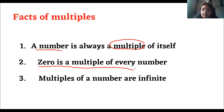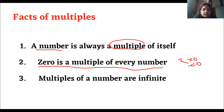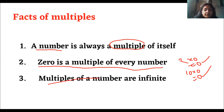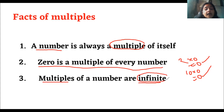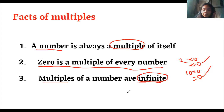Zero is a multiple of every number. Whenever we multiply zero with any number, we get zero only. For example, two multiply by zero — we get zero. Ten multiply by zero — we get zero. So zero is a multiple of every number. Third rule: multiples of a number are infinite, meaning a number's multiples can go on forever — they can become as big as you cannot even think of, because if we keep multiplying a number, we can go as far as we want. Unlike division, which stops at some point, multiplication keeps going further and further.